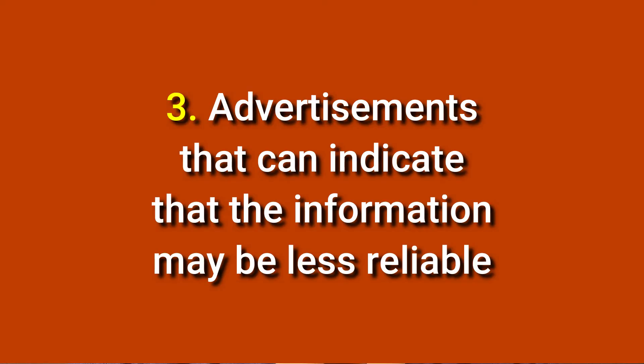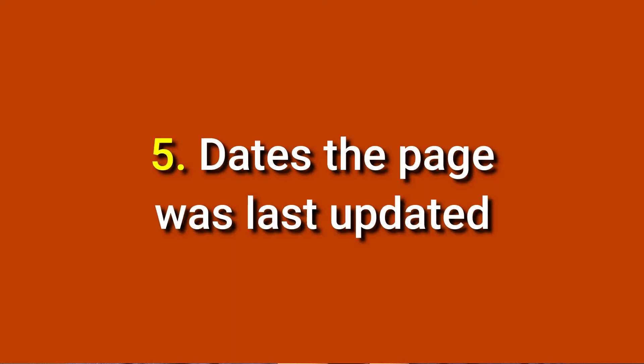To continue on what else to find out in evaluating websites — number three: advertisements. These can indicate that information may be less reliable. Number four: check the links on the page. Broken and incorrect links can mean that no one maintains the site, so the information may be out of date or unreliable. And number five: check when the page was last updated. The dates when pages were last updated are valuable clues to its currency and accuracy.